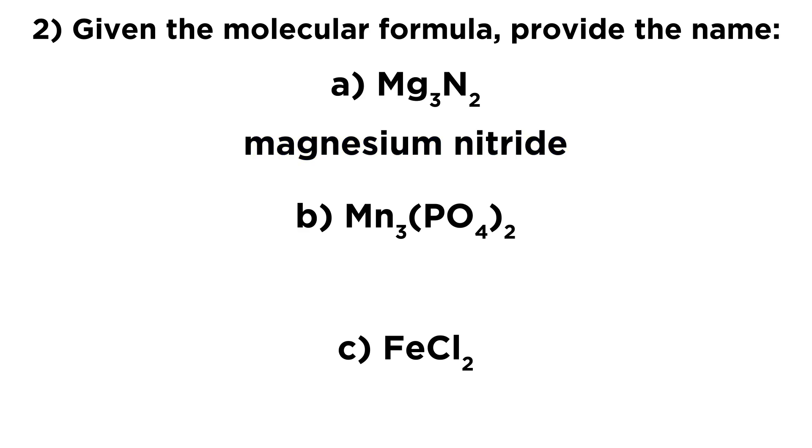Now, moving on, we have manganese. We have three manganese ions. And in this case, these are going to be Mn2 plus. And we just refer to them as manganese. And then we have two phosphate ions. Those are PO4 three minus. And so we have three manganese ions, we have two phosphate ions. Those come together to form manganese phosphate.